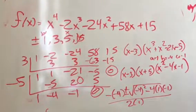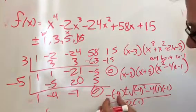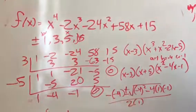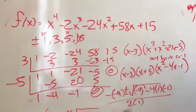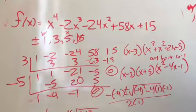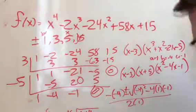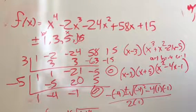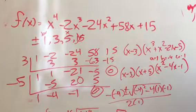And, so now I just have some arithmetic to do. Negative negative 4 is 4 plus or minus square root. That's a 16 plus 4 over 2, which is 4 plus or minus square root of 20 over 2.